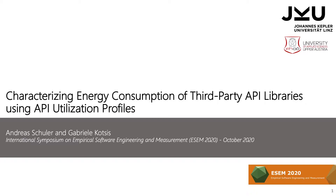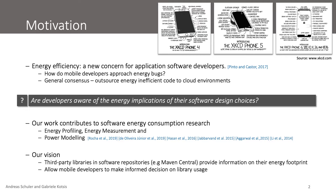Energy consumption has become an important non-functional quality aspect in mobile application development. However, according to a recent study from Pinto and Castor, who asked mobile developers how they approach energy-related bugs, the general consequence was to outsource the energy-inefficient code to cloud environments. So the question arises: given that mobile resource-constrained devices have become a crucial aspect of people's everyday life, are developers aware of the energy implications of their software design choices?